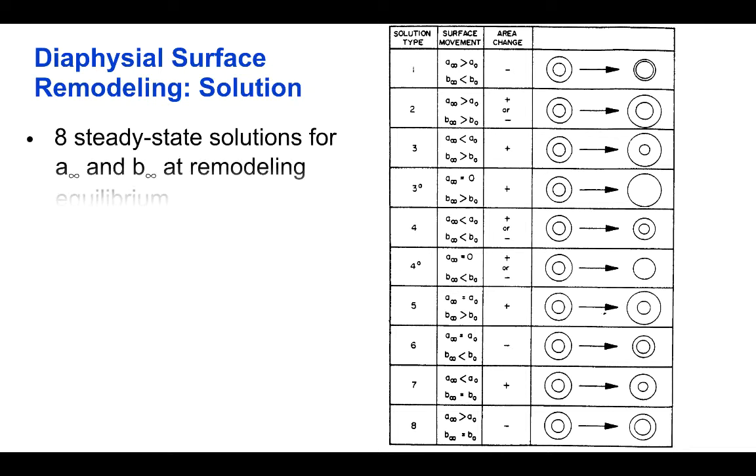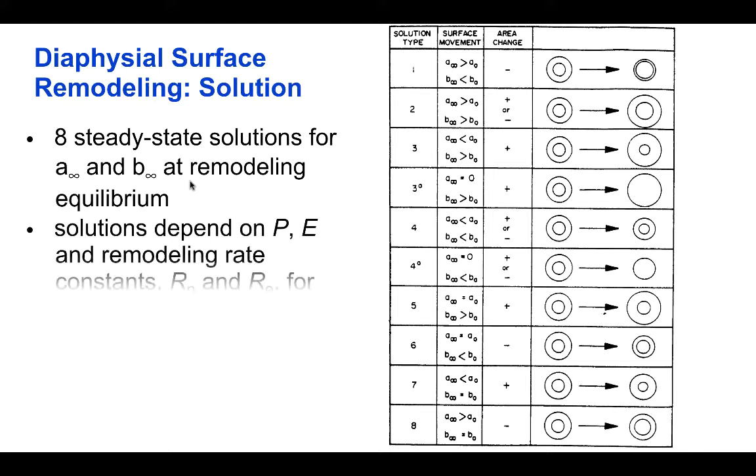So in fact, people have found that there are actually eight different steady state solutions for a_∞ and b_∞ at remodeling equilibrium. So that means the solution of the problem as time tends to infinity and a new equilibrium is reached.